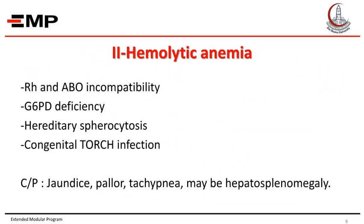Hemolytic anemia — its causes are RH and ABO incompatibility. In RH incompatibility, the mother is RH negative while the baby is RH positive. In ABO incompatibility, the mother is group O while the baby is A or B. Other causes include G6PD (glucose-6-phosphate dehydrogenase) deficiency, hereditary spherocytosis, and congenital TORCH infections — TORCH standing for toxoplasmosis, other infections, rubella, cytomegalovirus, and herpes simplex. The clinical picture shows jaundice with pallor, tachypnea, and possibly hepatosplenomegaly.